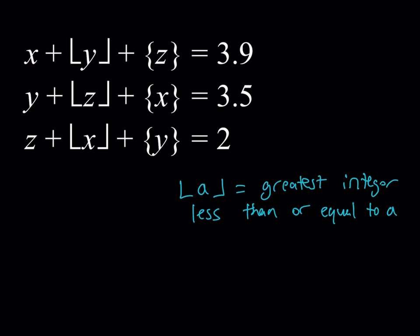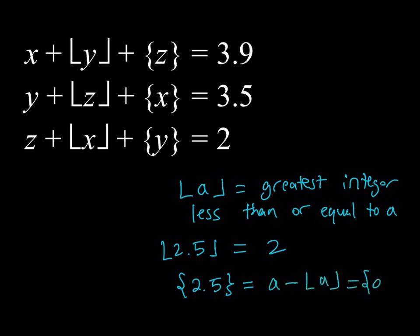What about the fractional part? Think about a number like 2.5. When you take the floor value of that number, you get 2 — rounding it down. So the fractional part is basically the difference between these two numbers. You subtract a minus the floor value of a. That's how you define the fractional part of a number.